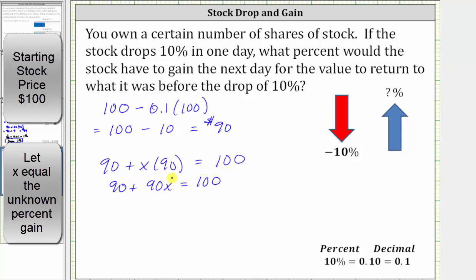The next step is to isolate the x term by subtracting 90 on both sides. 90 minus 90 is zero, giving us 90x equals 100 minus 90 is 10. 90x means 90 times x. To solve for x, we divide both sides by 90.